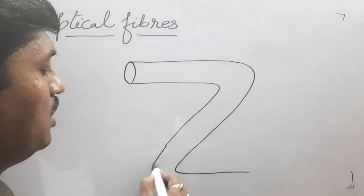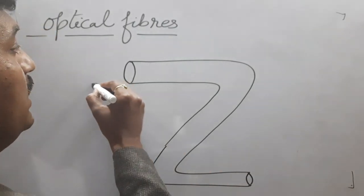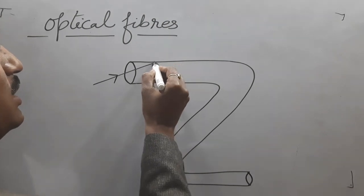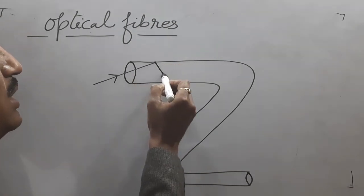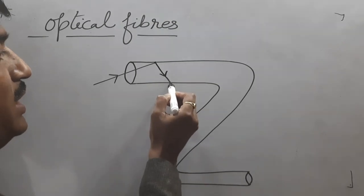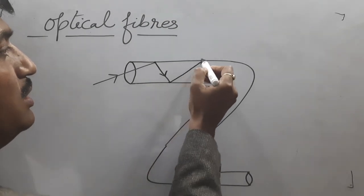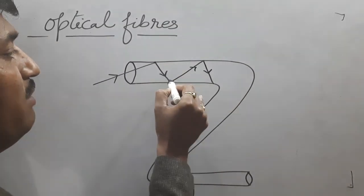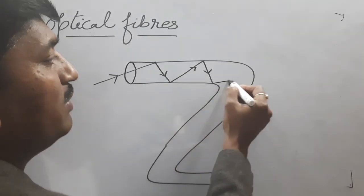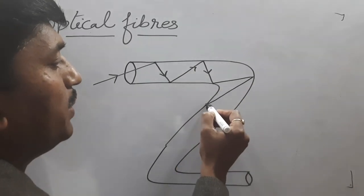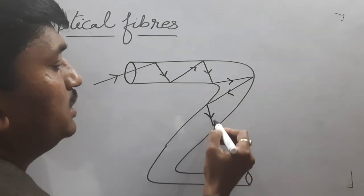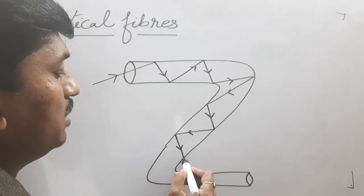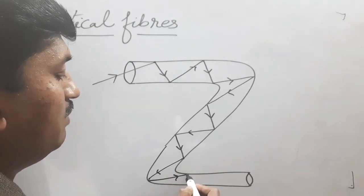Suppose this is a pipe of optical fiber and light passes through this pipe. At each point along the pipe there should be a total internal reflection — at this point, again at this point, and again at that point. Every point follows the principle of total internal reflection, and light passes through this pipe by following total internal reflection.